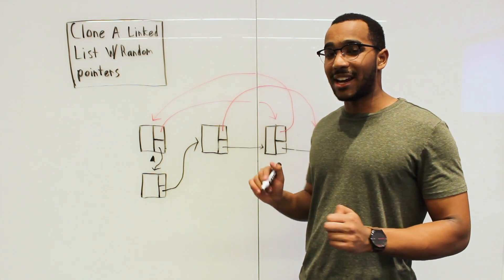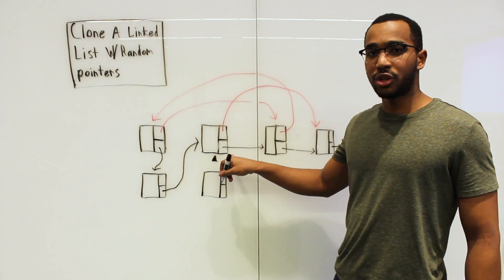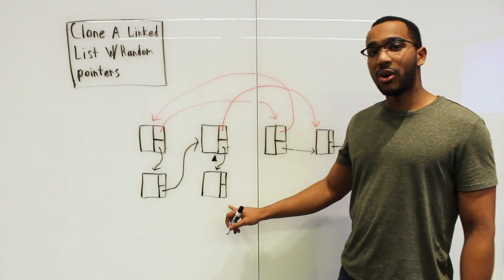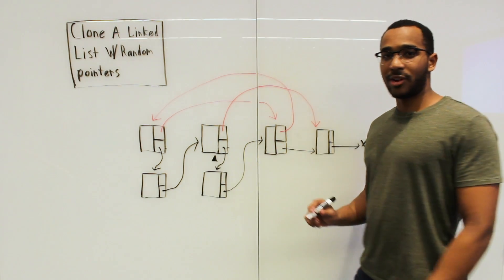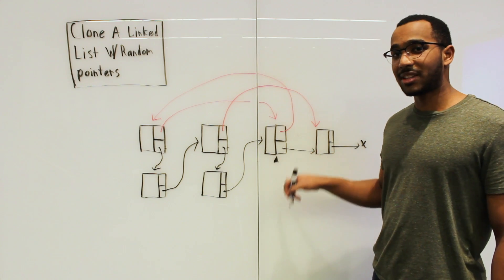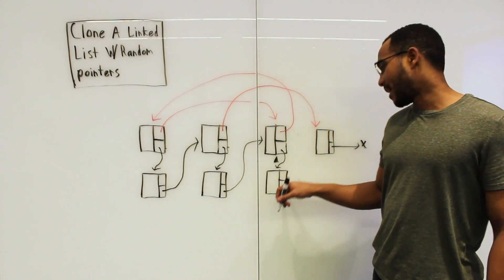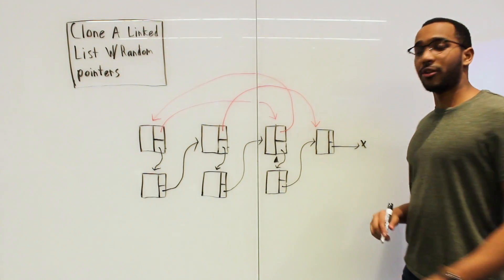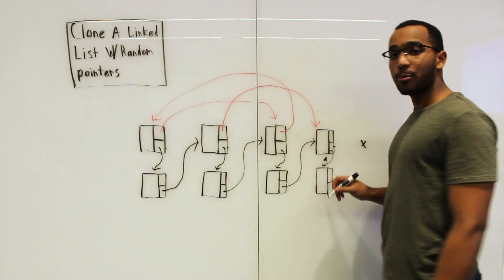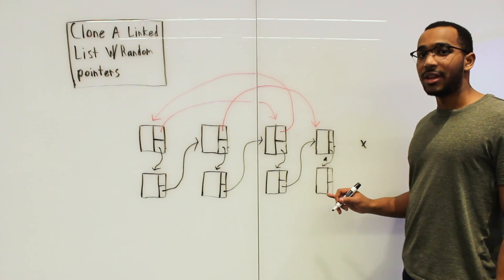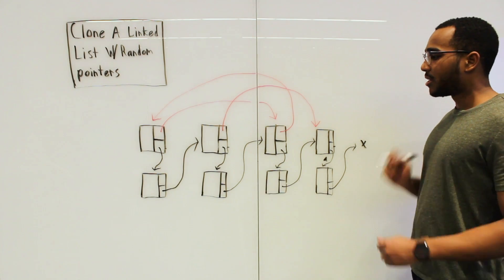We go to the next node — still our first pass. We point the original node's next to its clone, then point the clone's next value to the original node's next. We advance our iteration, create a clone, rewire its next to the clone, point the copy node's next to the original node's next, advance again, create another clone, adjust the next to point to the clone, and get the clone to point to the original node's next — which is null. That is our first pass.